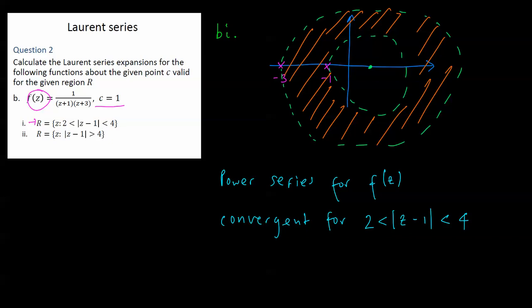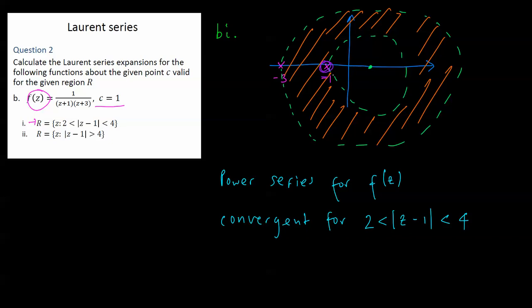We need to determine, for each singularity, what sort of series we need to find. For the singularity at negative 1, we need it outside the circle of radius 2, so we need a Laurent series for this one. And for the singularity at negative 3, we need it to converge inside the disk of radius 4, so we need a Taylor series for that one.